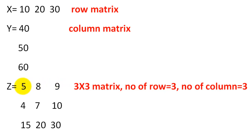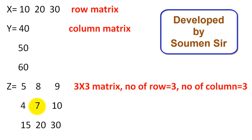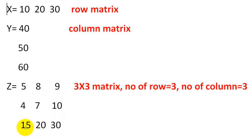Z is the TH into TH matrix. First row elements: 5, 8, 9. Second row elements: 4, 7, 10. Third row elements: 15, 20, 30.